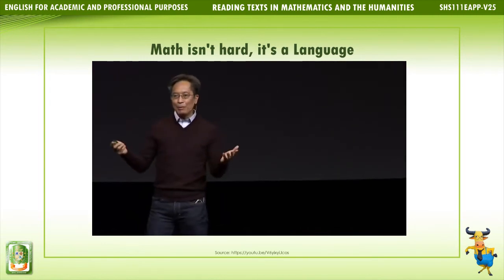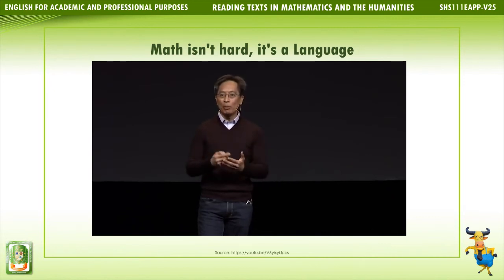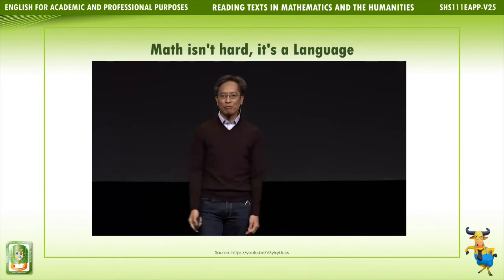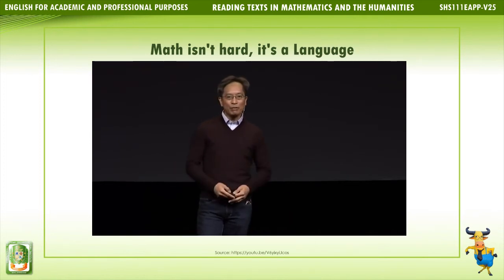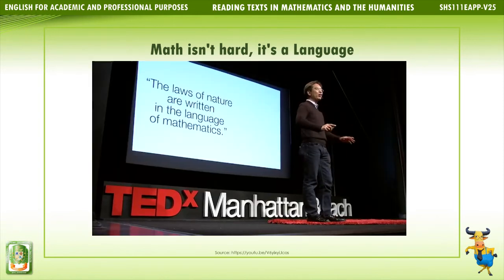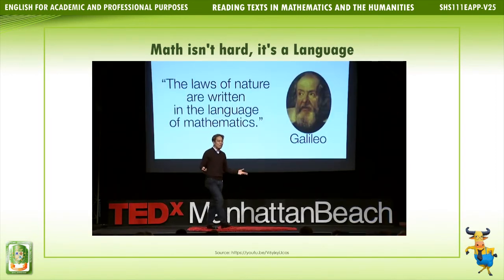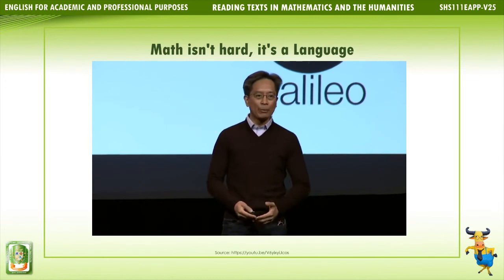This idea of math as a language isn't exactly new. A great philosopher once said, 'The laws of nature are written in the language of mathematics' — so even Galileo agrees. But somewhere along the line, we've taken this language of math — which is about the real world around us — and abstracted it beyond recognition. And that's why kids are confused. Read this 3rd grade California math standard and see if it would make sense to an 8-year-old: 'Understand a fraction 1/b as a quantity formed by one part when a whole is partitioned into b equal parts; understand a fraction a/b as a quantity formed by a parts of size 1/b.'